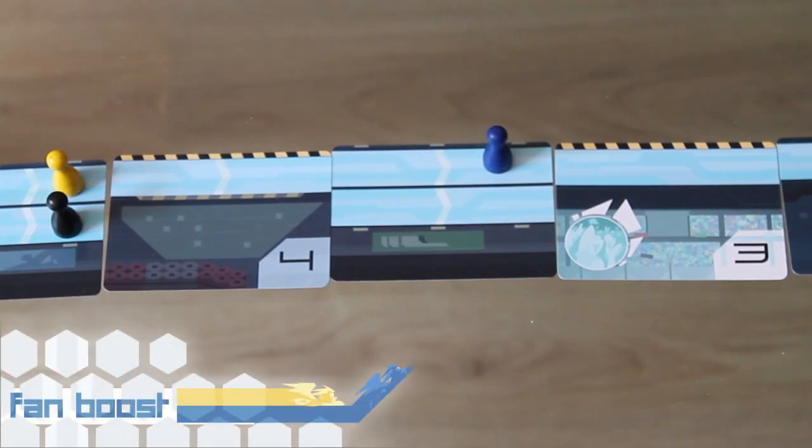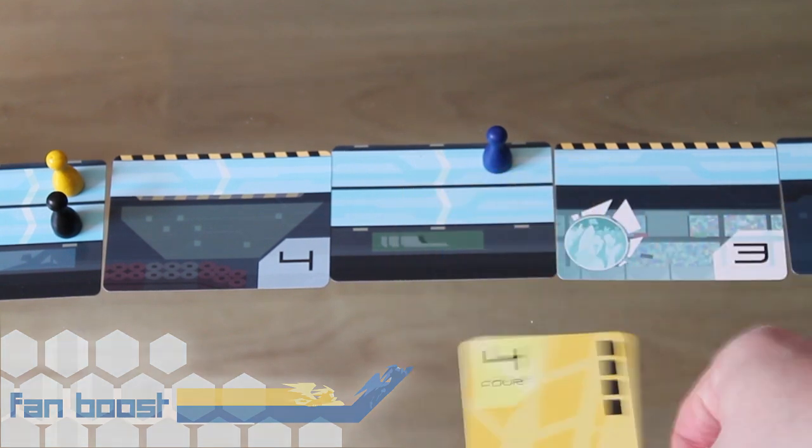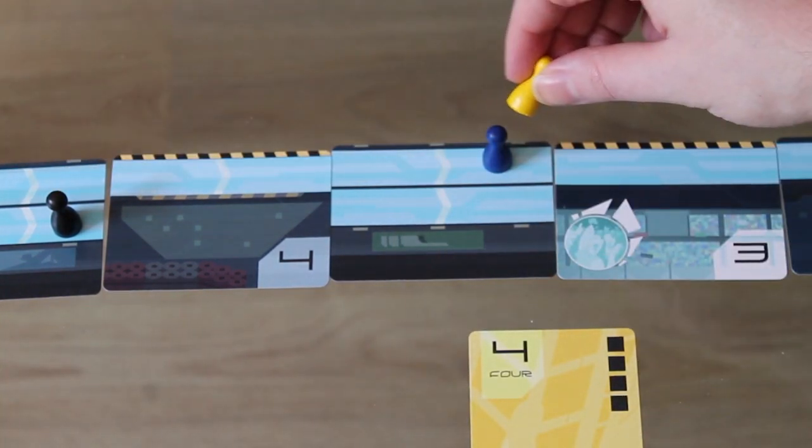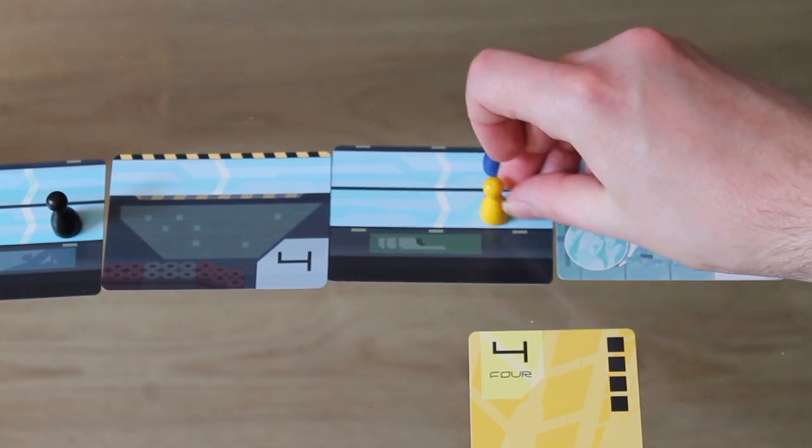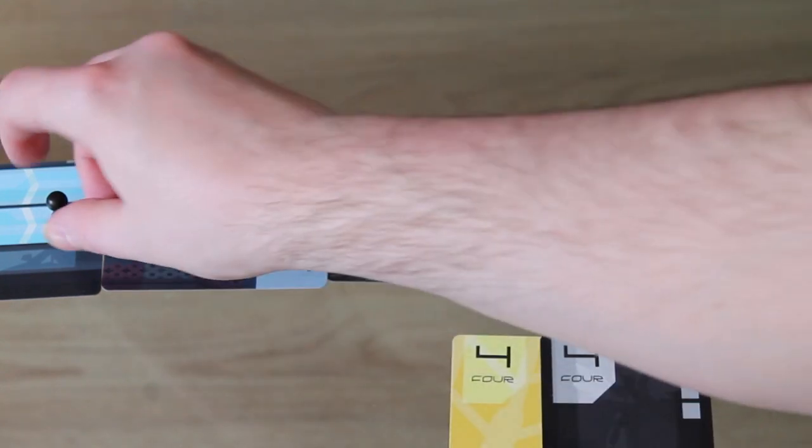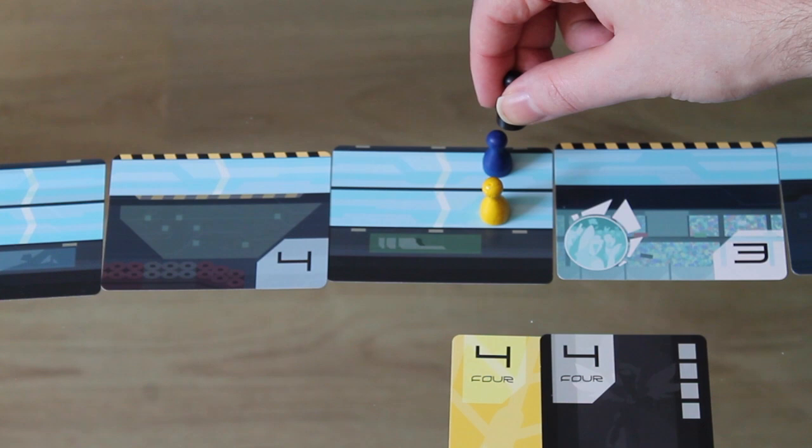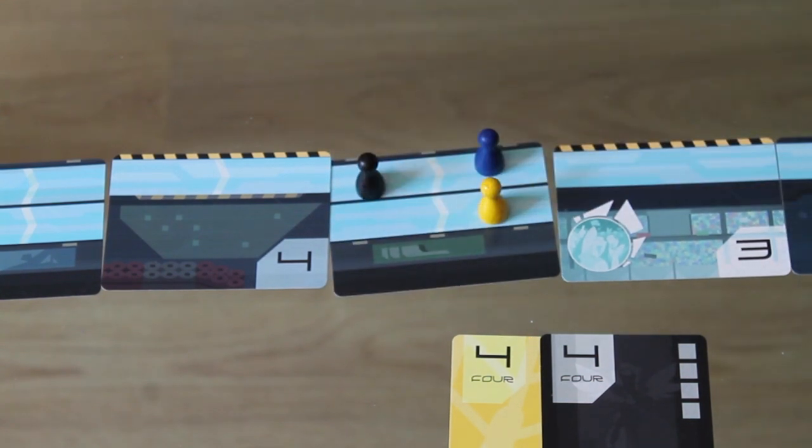So one question you've probably asked at this point is, what happens if someone's in the space that I want to land on? Well, if there's another lane, you go beside them, but if there isn't, you get bumped back a space, but you earn a cube of fan boost for your trouble.